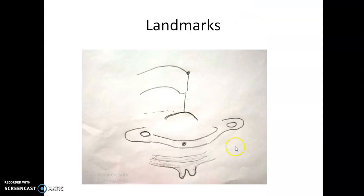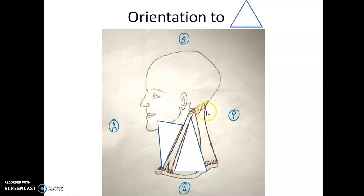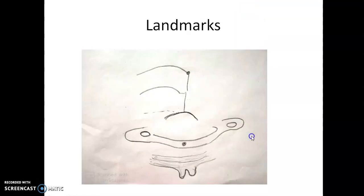The suboccipital triangle is not the same as the occipital triangle. The occipital triangle is by the side of the neck, whereas the suboccipital triangle is underneath the neck and approached from the posterior aspect. The suboccipital triangle belongs to neither the anterior nor the posterior triangle — it is a separate triangle on the posterior aspect of the neck.